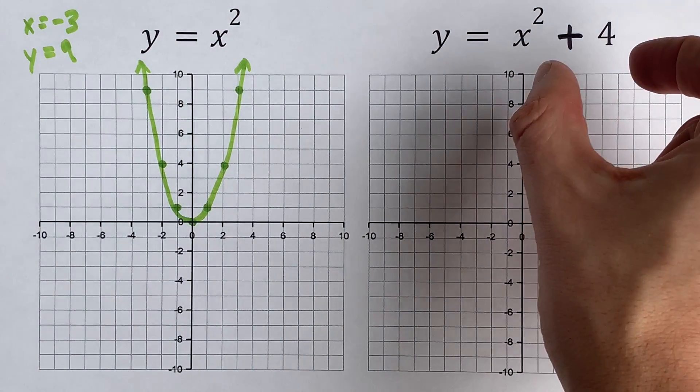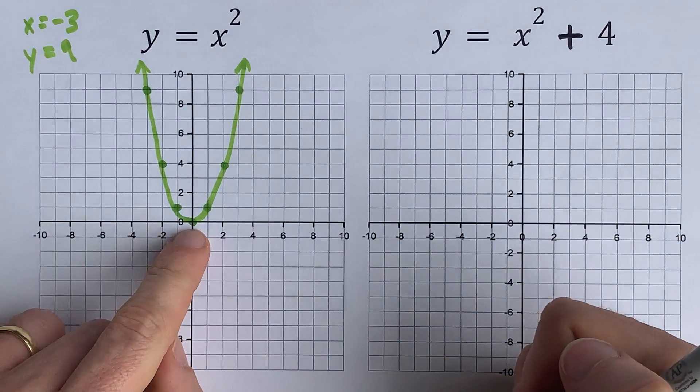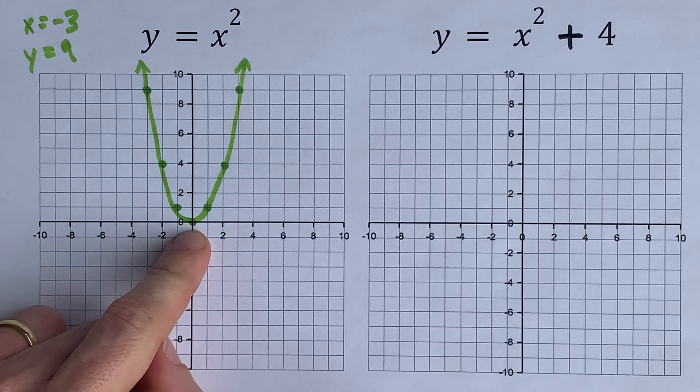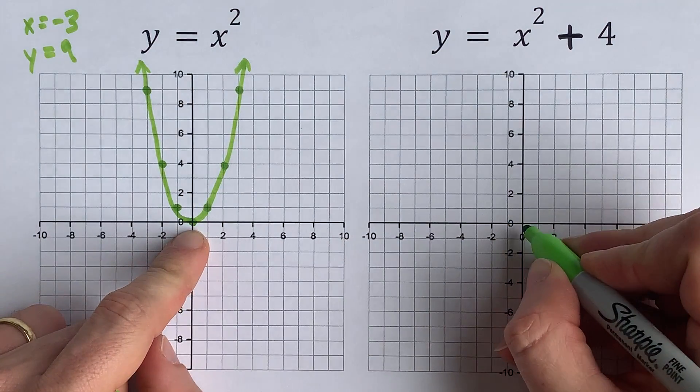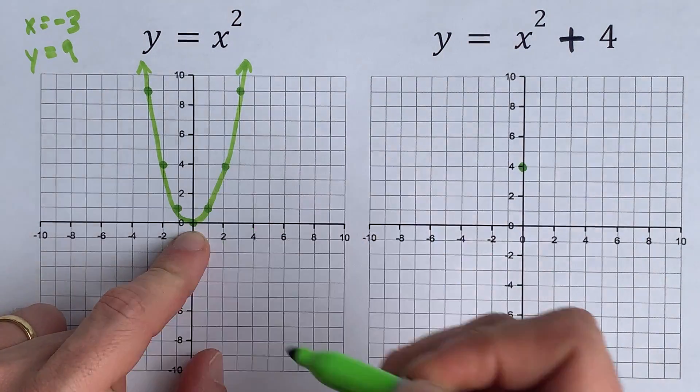This is a vertical translation up by 4. That means that the vertex, which was originally at (0, 0), is now at (0, 4), four units higher than it was.